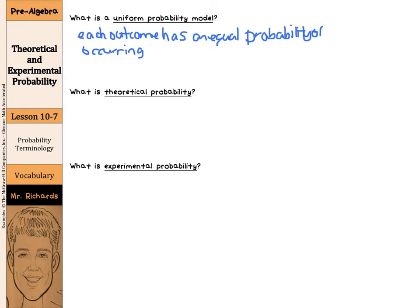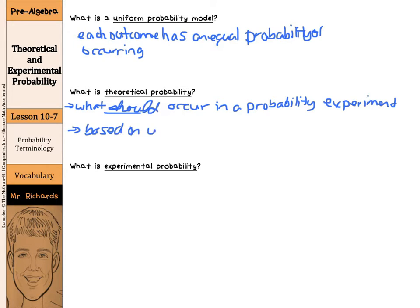Theoretical probability is what should occur in a probability experiment. For example, when you flip a coin, you should get heads 50% of the time and tails the other 50% of the time. It's based on uniform probability.